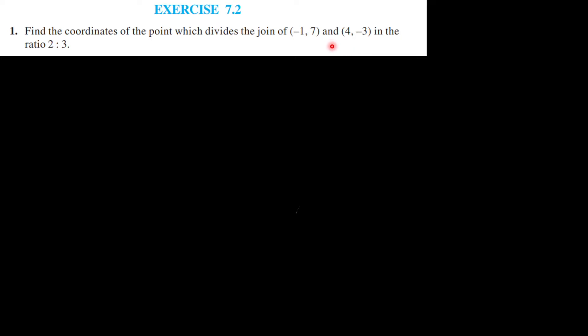The general section formula is M1X2 plus M2X1 by M1 plus M2, M1Y2 plus M2Y1 by M1 plus M2. If it is externally divided, the formula is M1X2 minus M2X1 by M1 minus M2, M1Y2 minus M2Y1 by M1 minus M2.